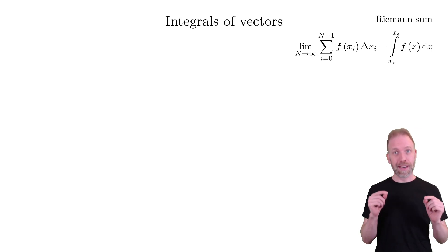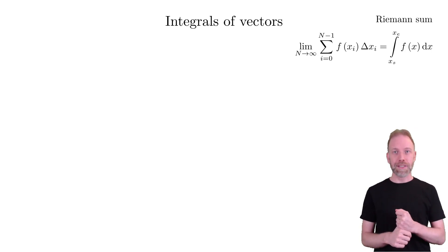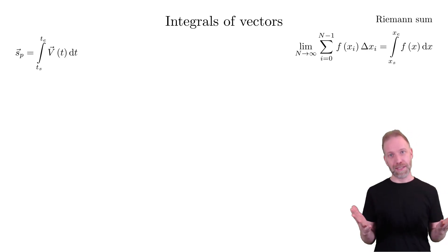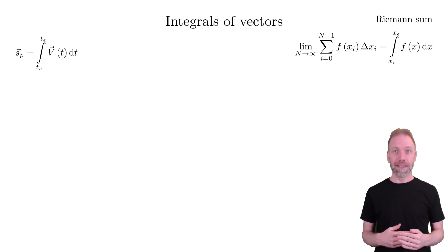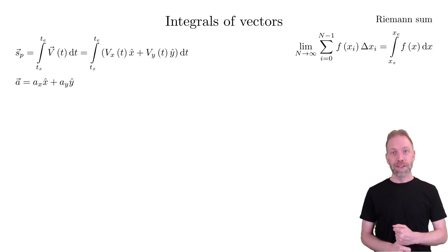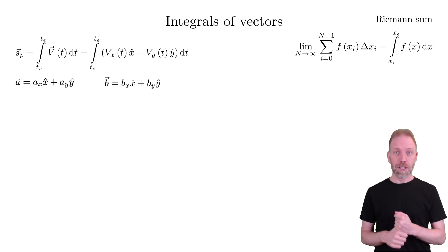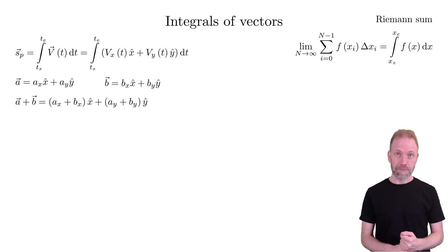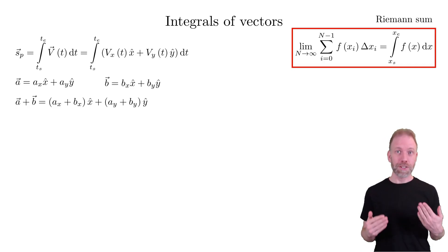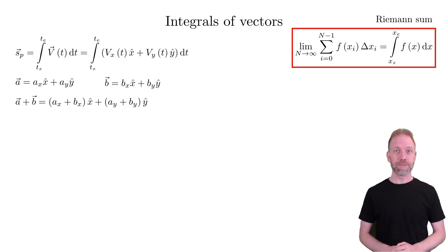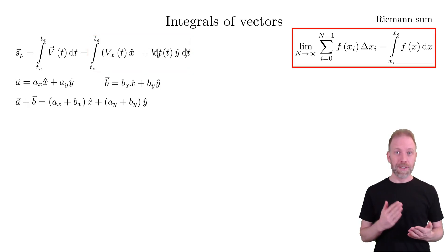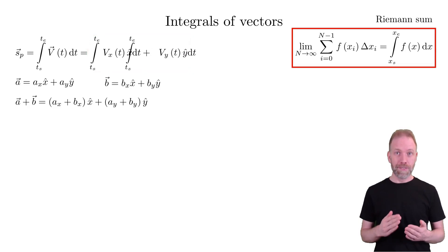This video will focus on line integrals, but first let us mention how we can integrate vectors. Start by defining the change in position, also called displacement, as the integral of the velocity over time. When we add vectors together, we simply do it component by component. As the integral comes from the Riemann sum, it is just many additions and should follow the same rules as addition. Therefore, we can simply write the integral over a vector as one integral for the x component and one for the y component.